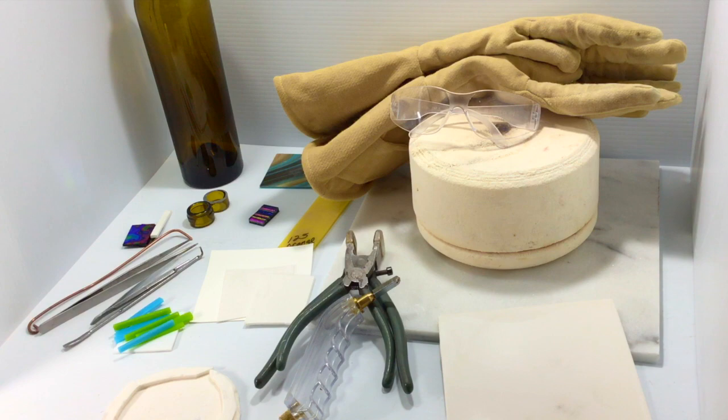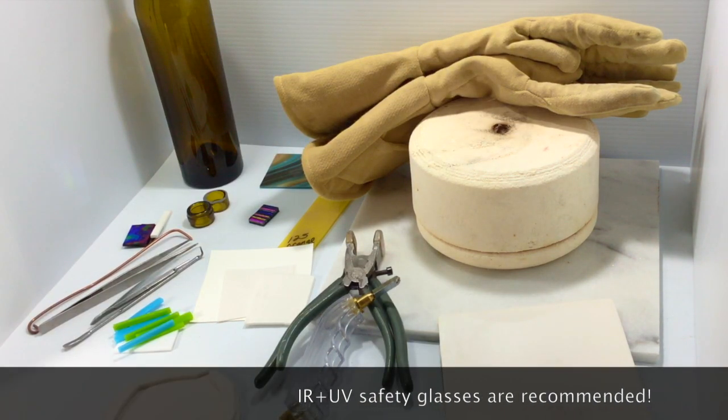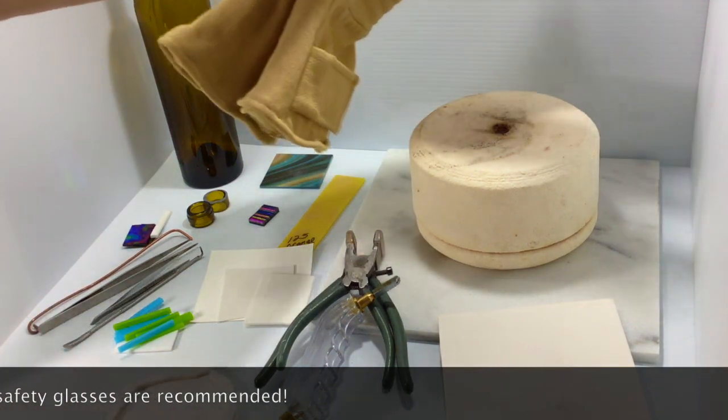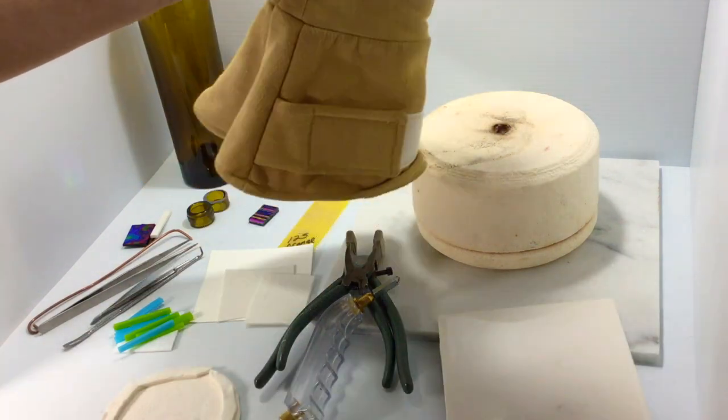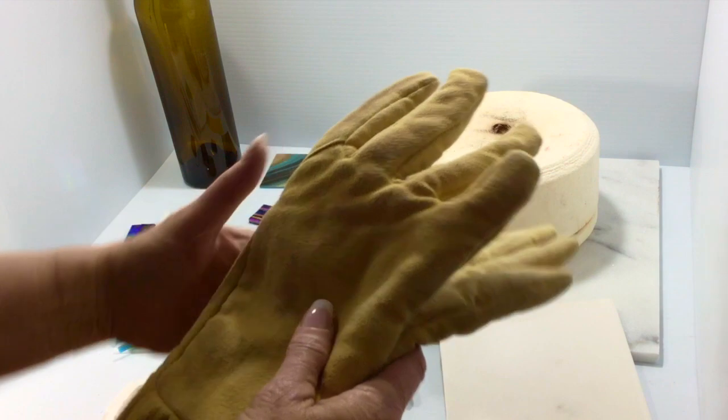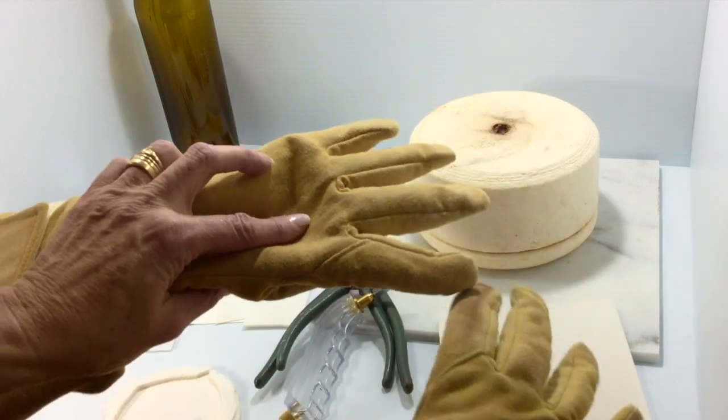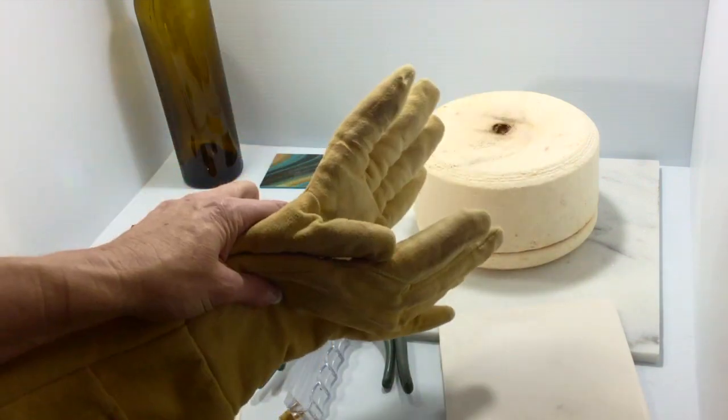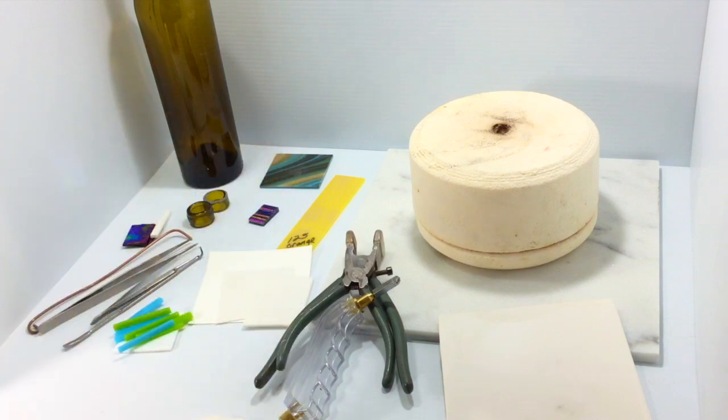You want to make sure that you have safety goggles for sure. You're getting down close to the glass when it's hot, and you want to protect your eyes. Also a mask, just something to protect your lungs because you are working with some fiber paper. I also use welding gloves. That just happened to be what I had, but there's Kevlar gloves. There's all types of gloves out there. But something to protect your hands.